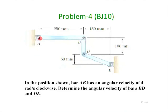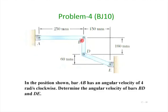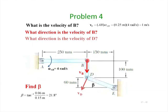Point B is common to rods AB and BD. Viewing from rod AB, since AB undergoes pure rotation about A at 4 radians per second clockwise, point B can only move vertically — in the downward direction for clockwise rotation. So we know the velocity direction at both B and D for rod BD. These two velocity directions are not parallel to each other, so we can find the instantaneous center of rotation by drawing lines perpendicular to each velocity.